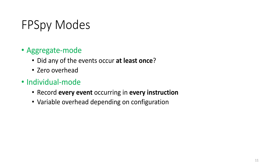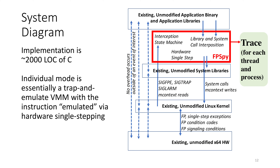FPSpy can operate in one of two modes. There's aggregate mode, which is very simple — it just detects that an event happened at least once, and this is zero overhead. Then there's individual mode, where the complexity lies, which can potentially record every event that occurs in every instruction. The main point of the system diagram is that the meat of this 2,000-line program is individual mode, which operates like a trap-and-emulate virtual machine monitor, with instruction emulation via hardware single-stepping. Every single thread or process in the program generates a separate trace.